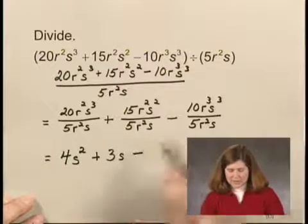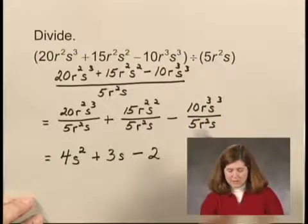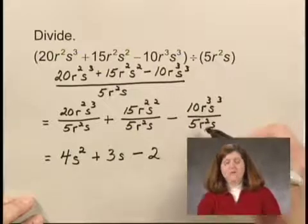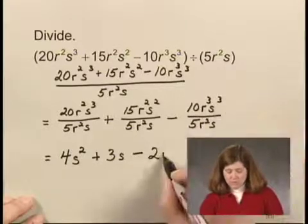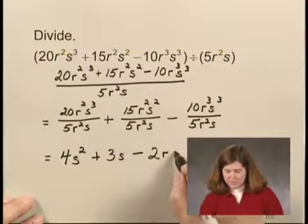And finally, minus 10 divided by 5 is 2. r cubed over r squared is r. And s cubed over s is s squared.